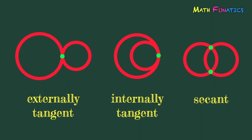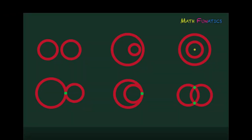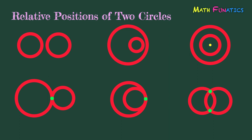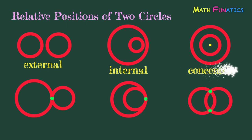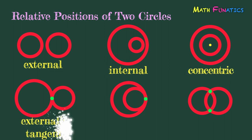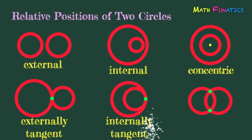All these six illustrations are the relative positions of two circles. Let's identify each. We have the external, internal, concentric, externally tangent, internally tangent, and secant.